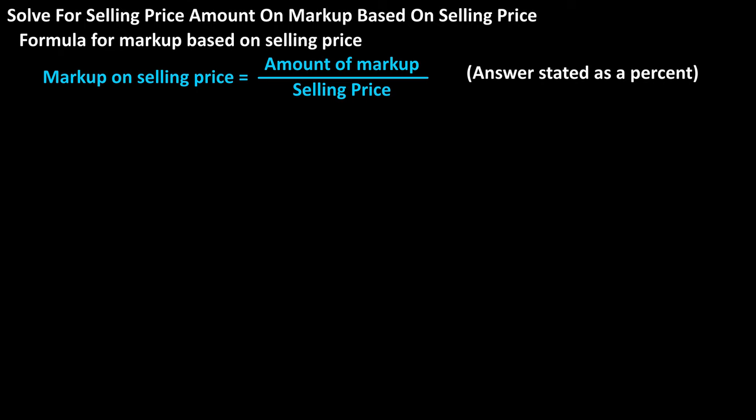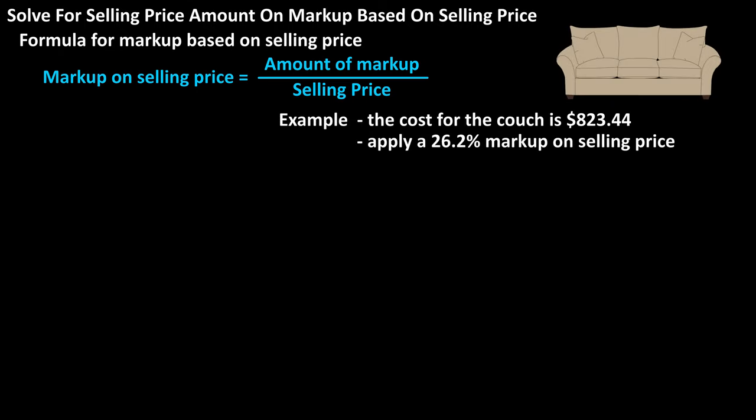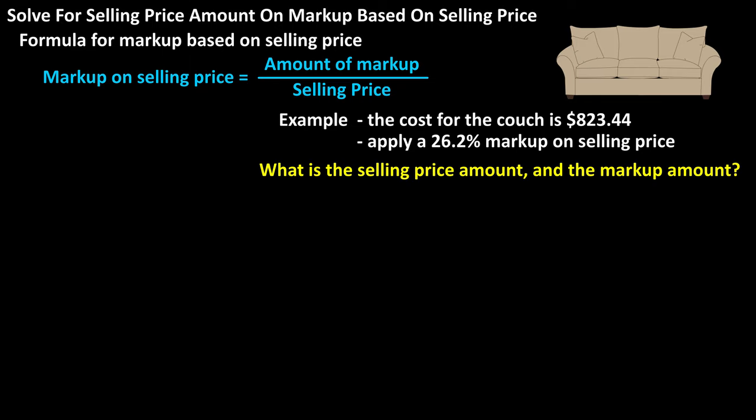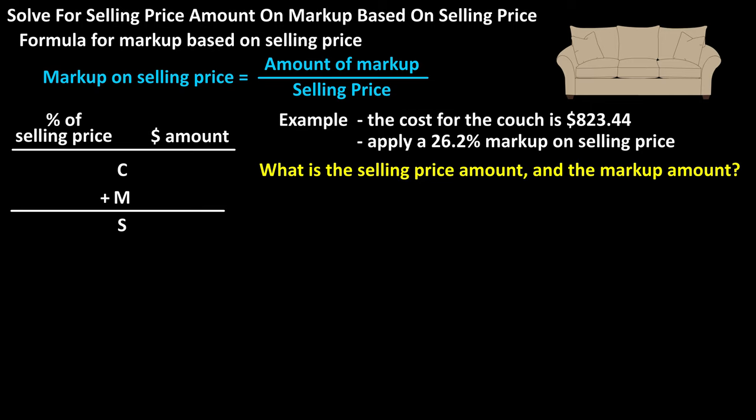As an example, let's say that a retailer is selling a couch. Their cost for the couch is $823.44, and they apply a 26.2% markup based on selling price to the couch. So what is the selling price amount of the couch, and what is the markup amount for the couch? We're going to start by drawing a table with percentages and dollar amounts for cost, markup, and selling price, and we'll fill in what we know.